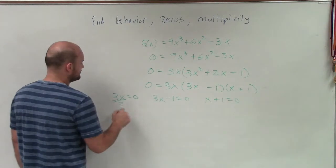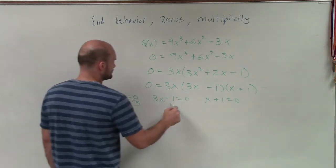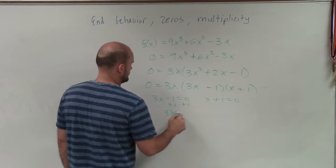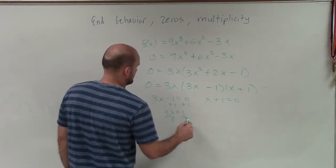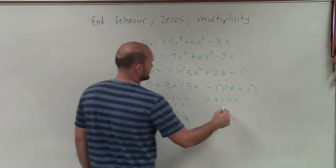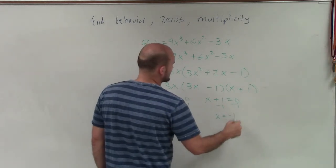So now solving for each of my zeros, I get x equals 0, x equals 1/3, and x equals negative 1.